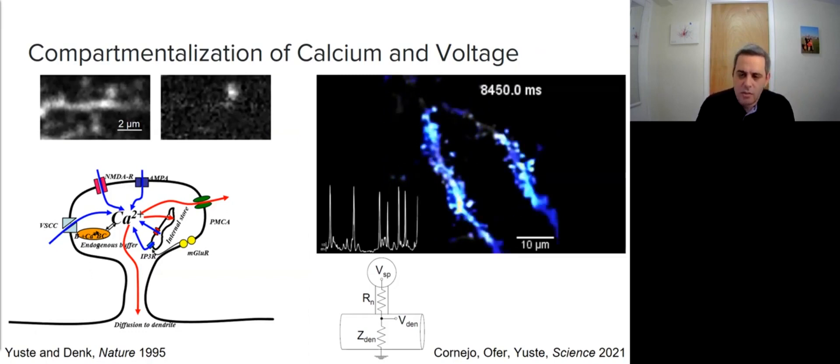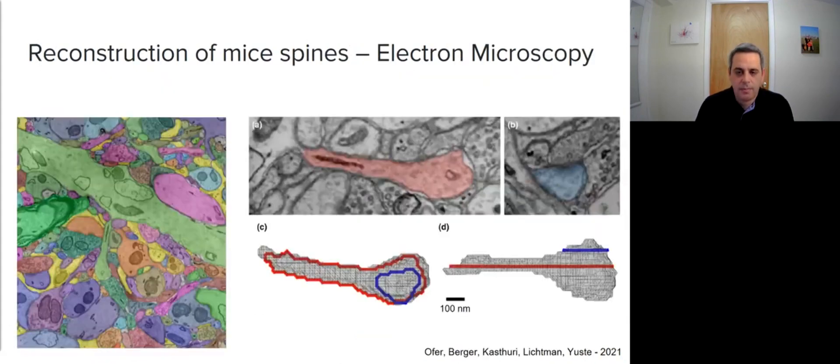We see that spine morphology of the head and neck is very important and governs synaptic strength. We started by reconstructing mouse spines from electron microscopy. This work was done in collaboration with the Lichtman lab at Harvard University. The EM enables high resolution at the nanometer scale.